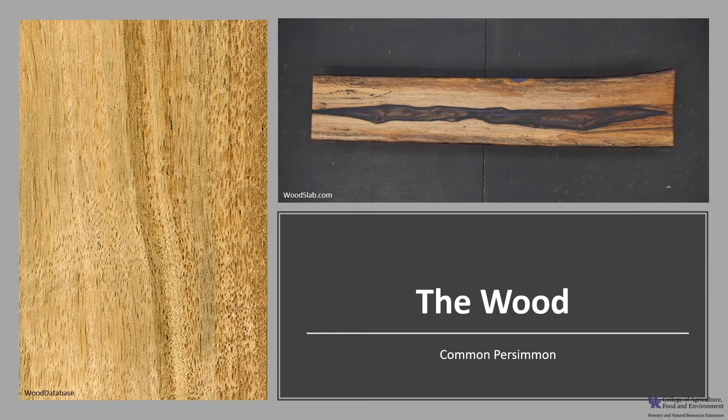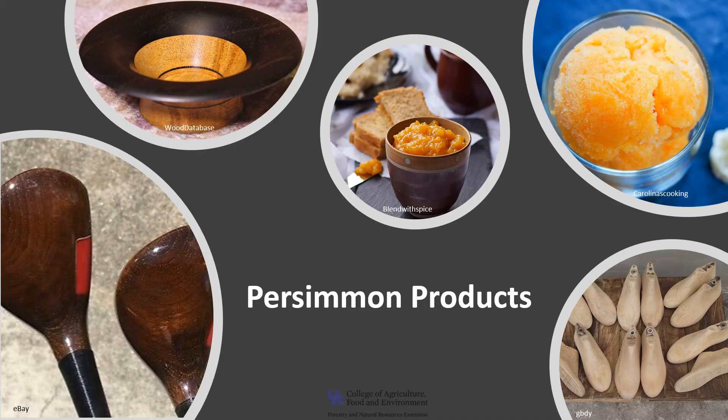Persimmon wood is heavy, hard, and strong, with excellent shock resistance. The sapwood is white to a pale yellowish brown, and the heartwood is very dark brown to black, like ebony. The wood is very close grained with an average of 14 growth rings per inch — that's a lot. Products from persimmon include golf club heads, shuttles and textile looms, turned items, and shoe lasts, which are the forms shoemakers use to shape or mold shoes.